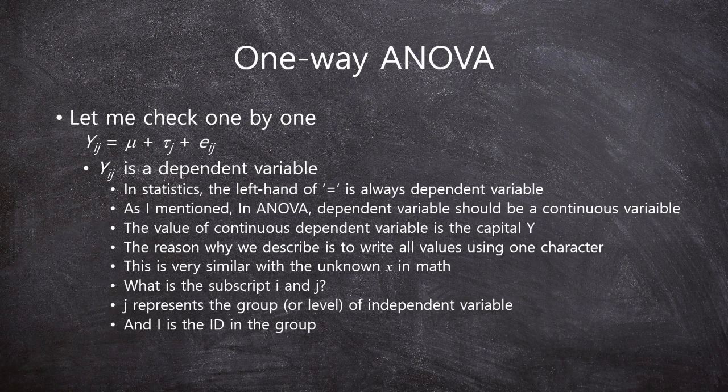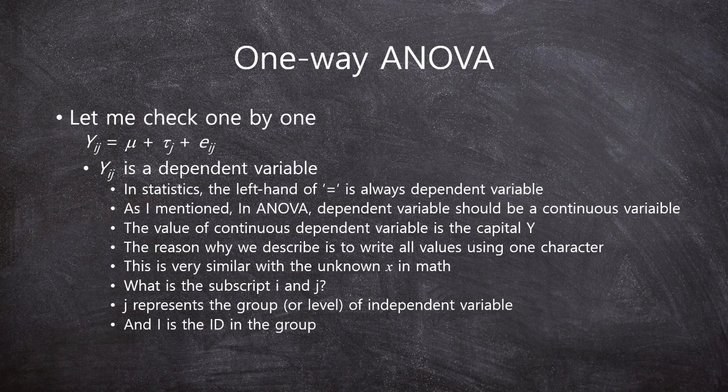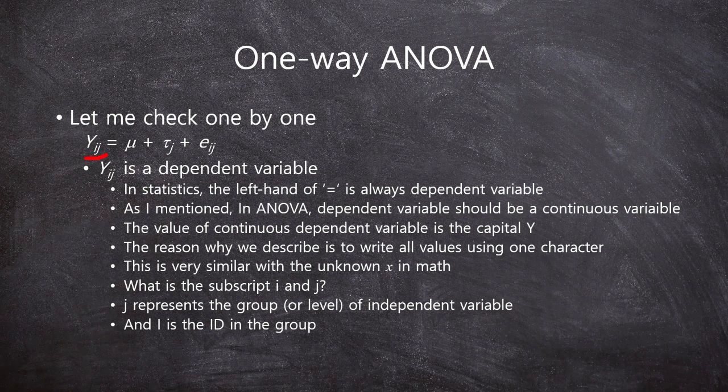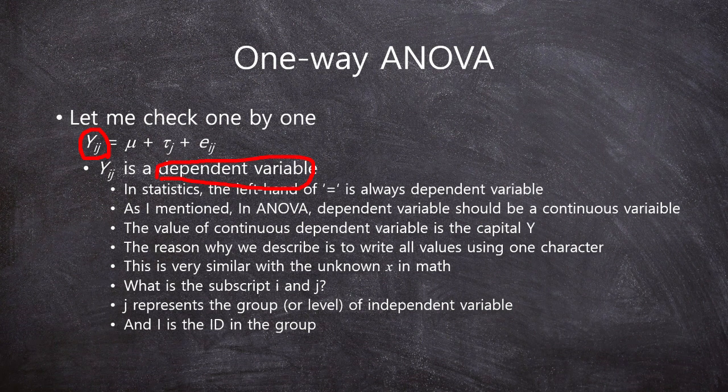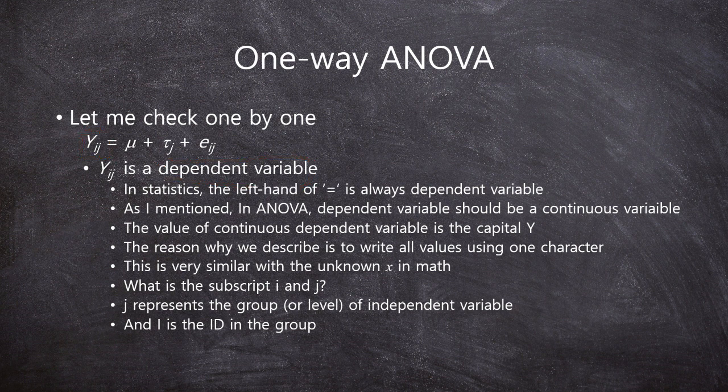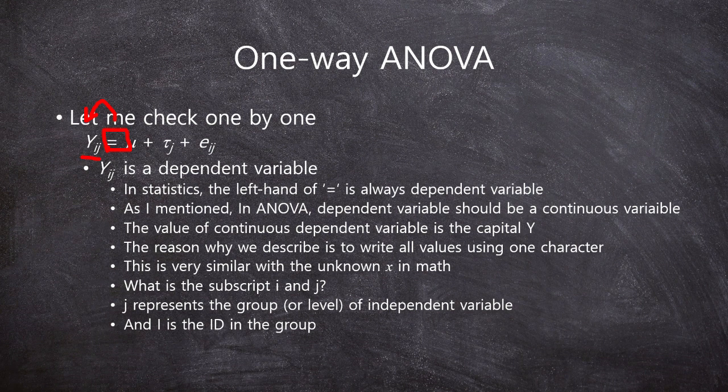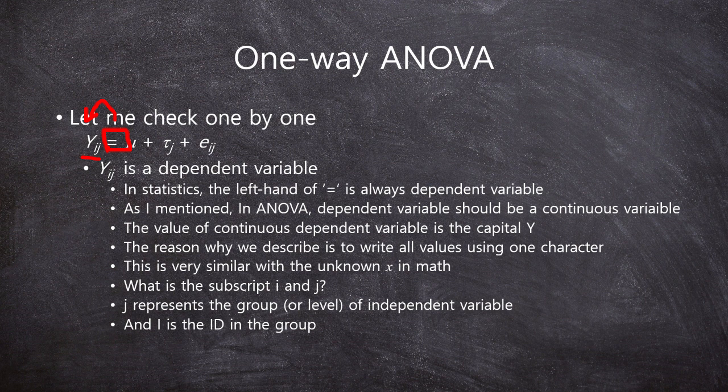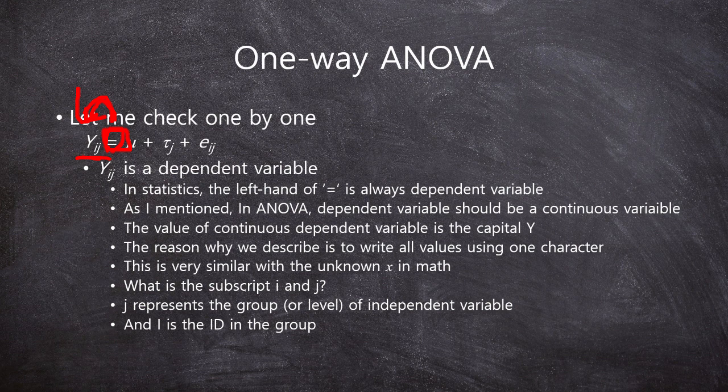And the y. The left hand, left side of the equation is y_ij. This is a dependent variable. Always, always. In statistics, the left hand side of equal is always dependent variable. You must remember. Always, the left side of equal is dependent variable.